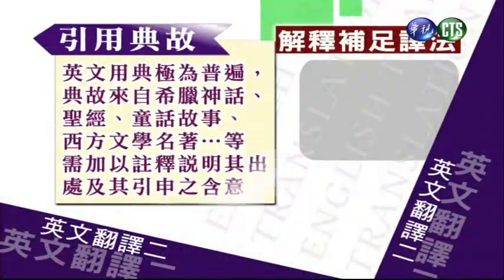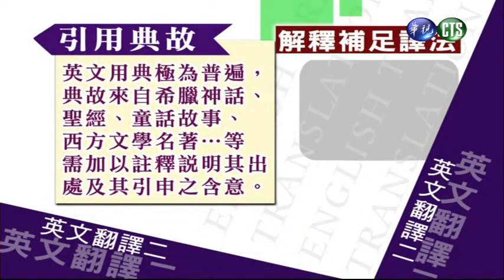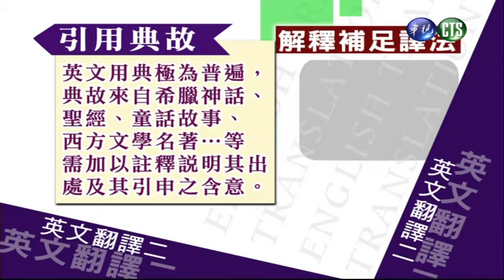第二种叫引用典故，我们也是要做解释。英文用典是非常普遍的。典故来自，譬如说是希腊神话啦，或者圣经，或者童话故事，西方文学名著等等。这些出处都需要加以注释，也要说明它的一些隐含的含义。好，我们看一下例句。